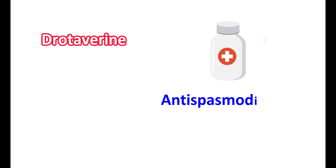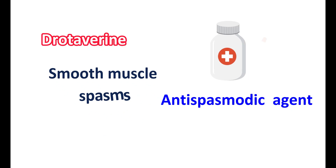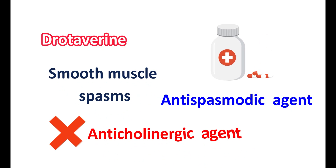Drotavarine is a medication that is classified as an antispasmodic agent. This medication can be used to relieve smooth muscle spasms. However, this medication is not an anticholinergic agent.